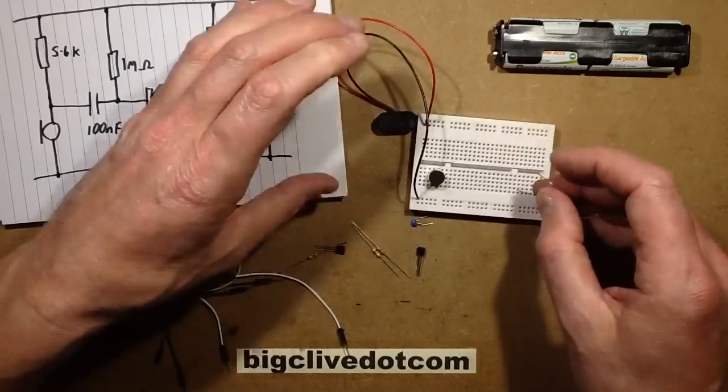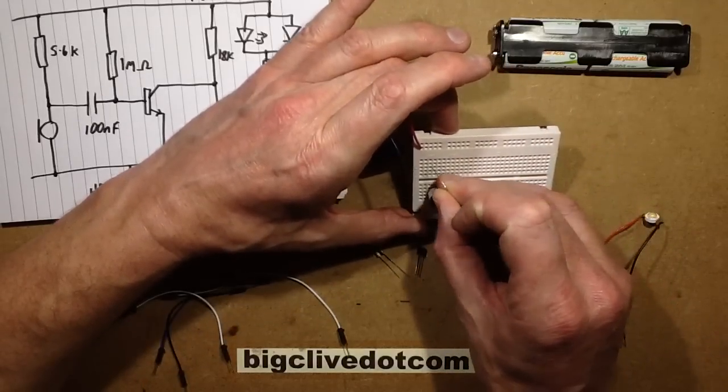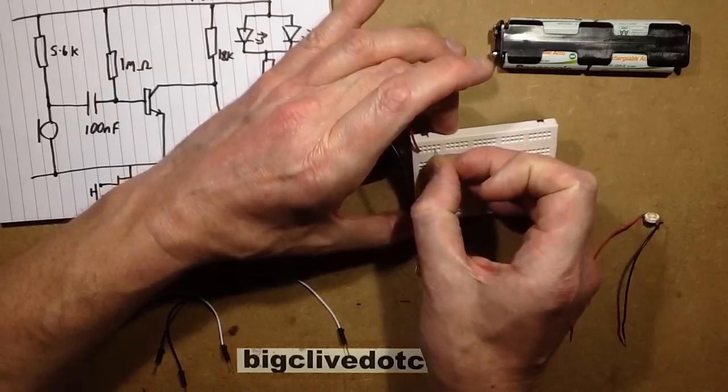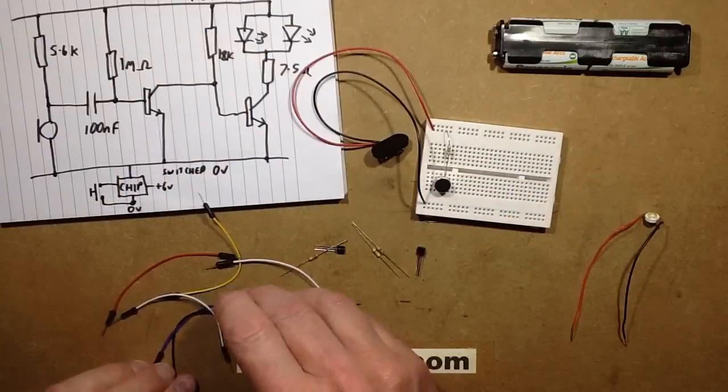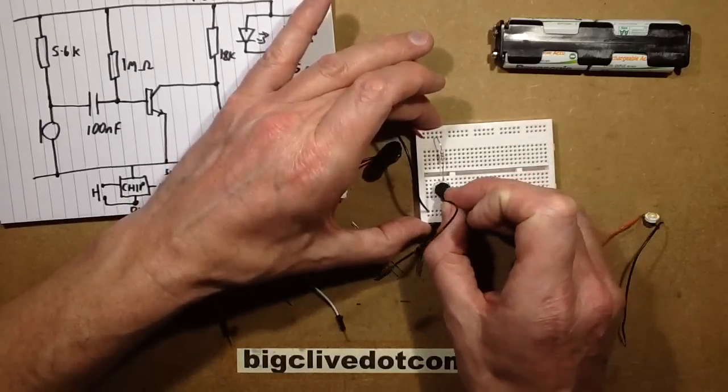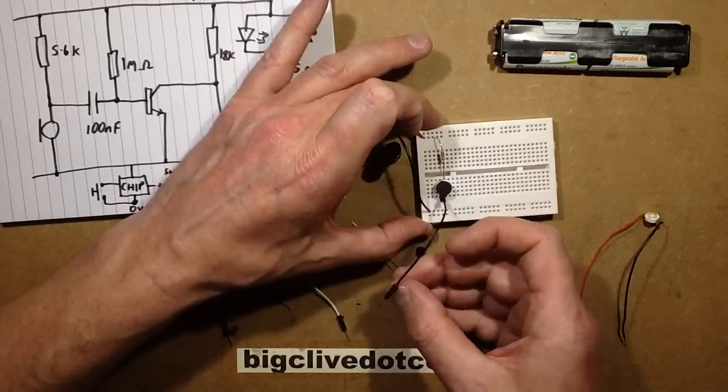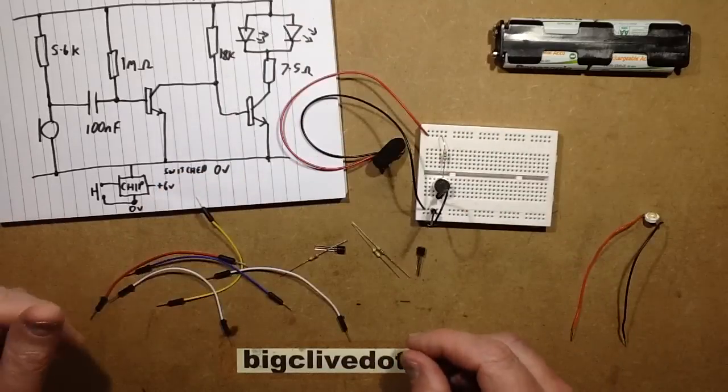That's going to the positive connection to this microphone. I have to be careful not to short this out here. That's going to the positive rail. I need a link from the negative of the microphone to the negative rail.